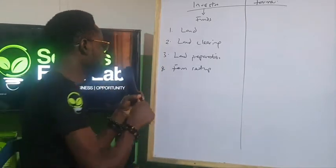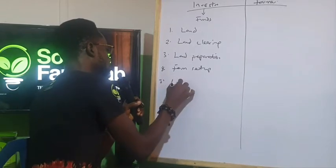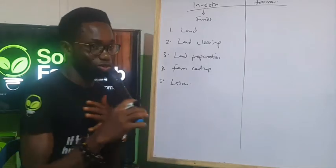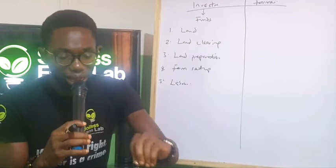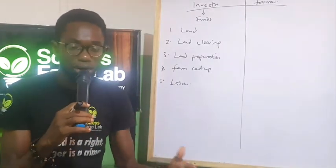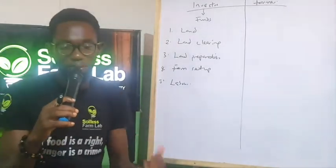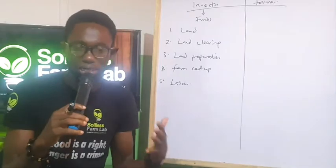Then the number five thing you are going to be paying for is for labor. Now when we say labor, we are not talking about us as Soilus Farm Lab, but rather we are going to employ farm hands, laborers that will be in charge of harvesting, planting. They are the ones that will go around the farm to check.